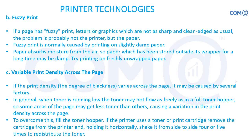Variable print density across the page means the printout is not uniform — some areas are dark while others are light. This suggests the toner is not dropping uniformly, possibly because the toner is running low or the particles are not evenly spread inside the cartridge. Remove the toner cartridge, shake it up and down for a few moments, reinsert it, and check whether printing is now uniform. If the problem persists, the toner cartridge may need to be replaced.